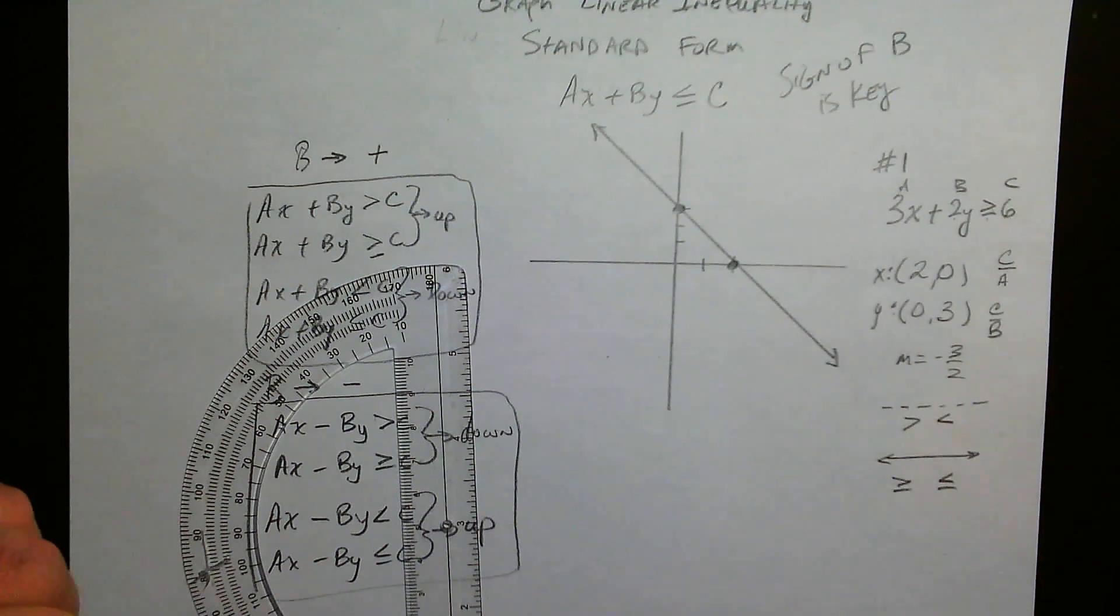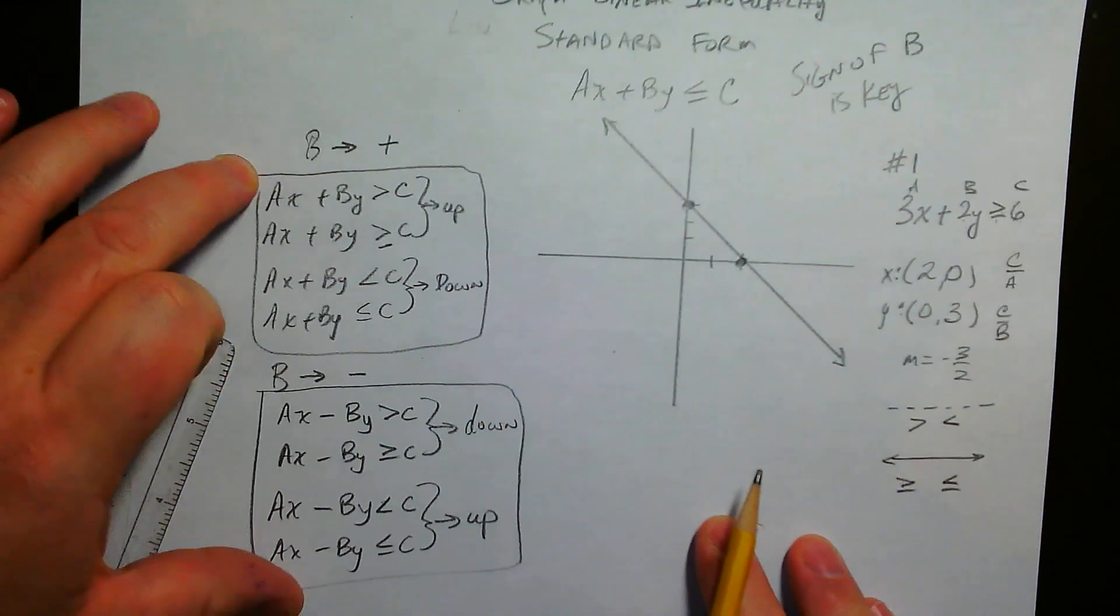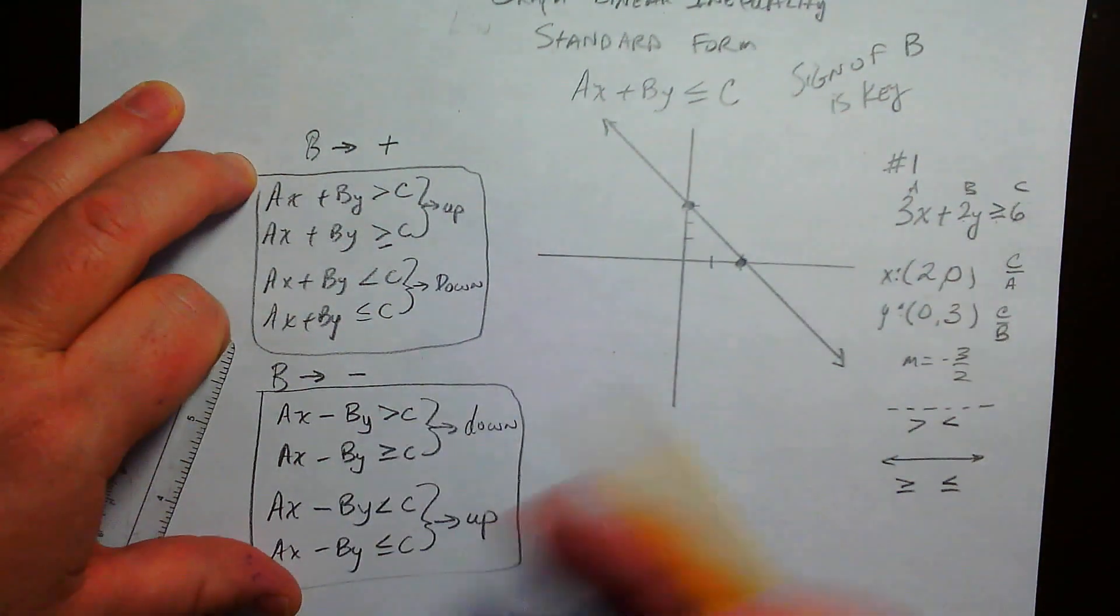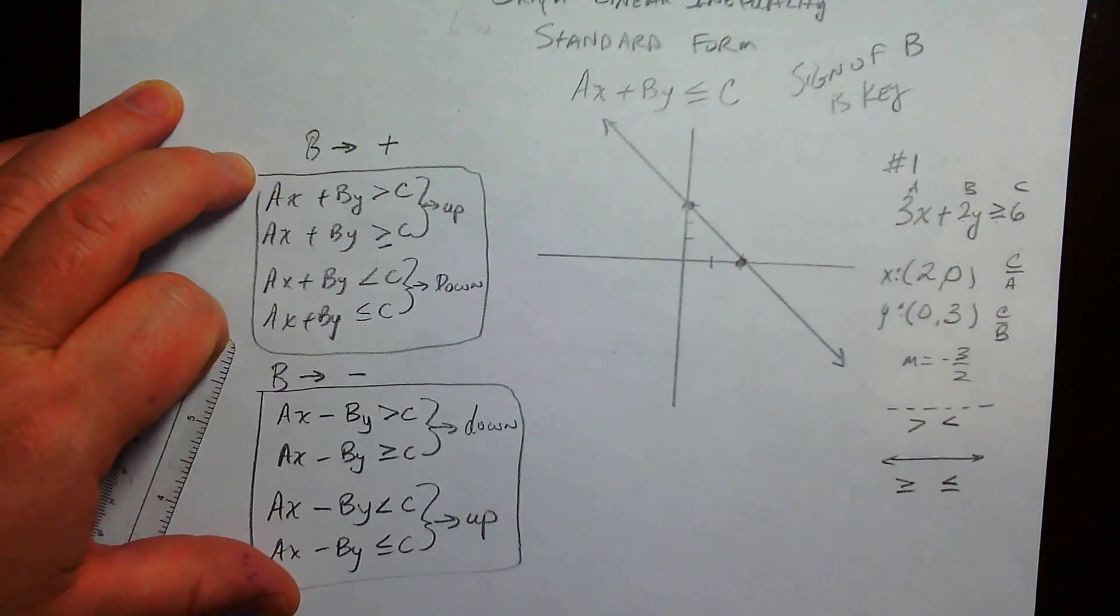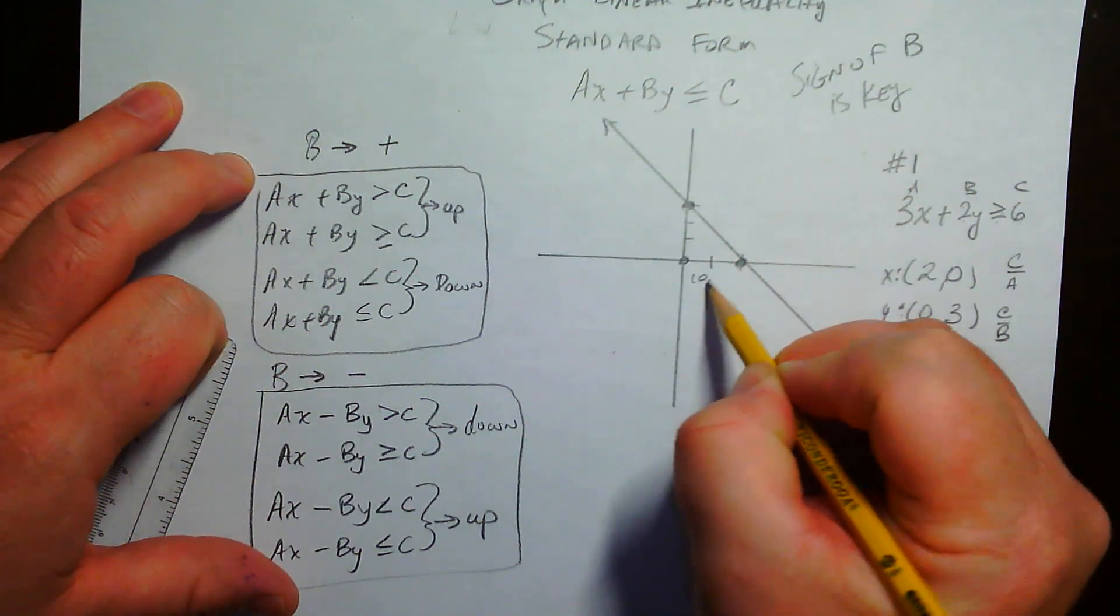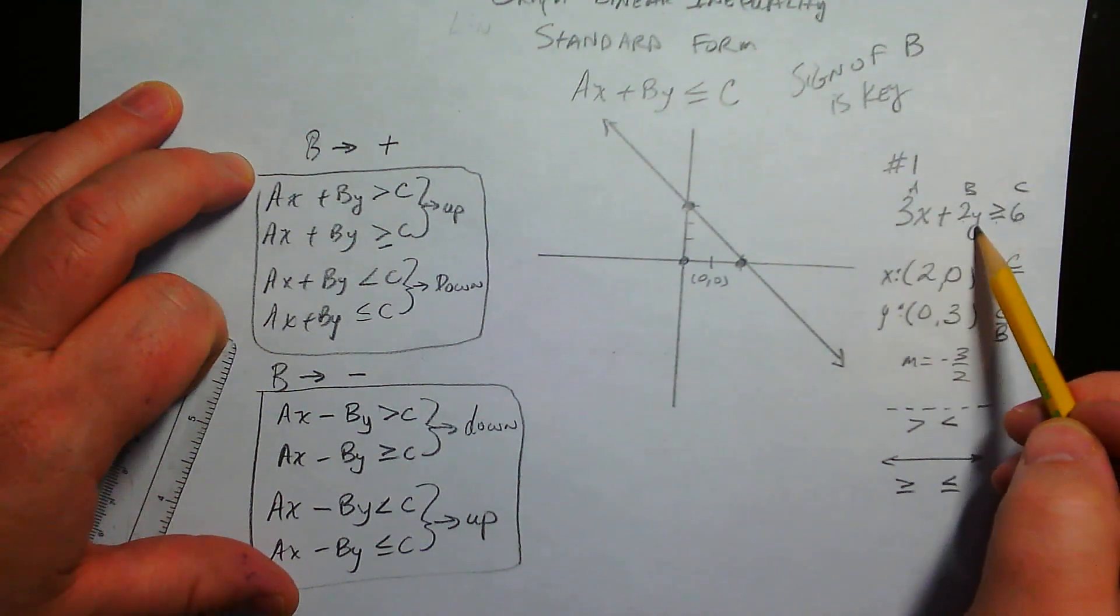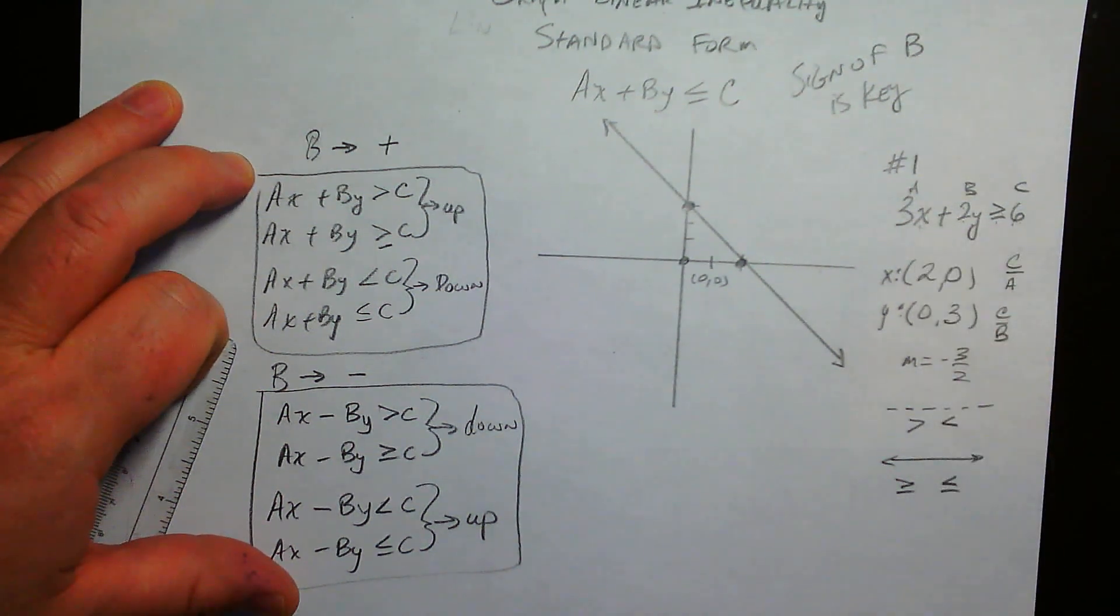Okay, so now we have to figure out, is it shaded above or below? Now, my personal favorite way to do it is not to use these kinds of things right here. I always forget that and mix it up. It's too complicated for my little tiny brain. So what I usually do is I just pick a number like 0, 0, and I plug it in and see. If I plug in 0 for x and 0 for y, I get 0 is greater than 6. So that's false.